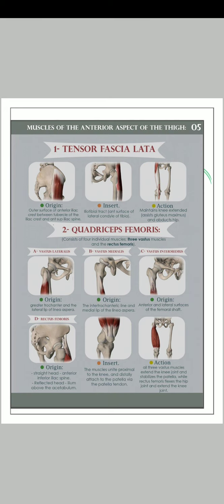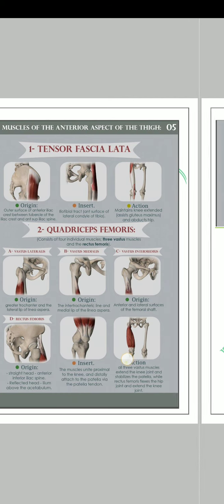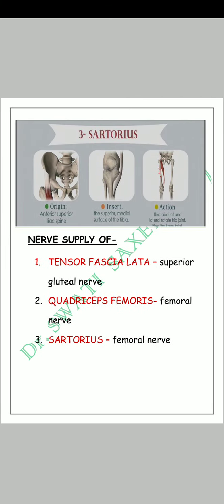So we have learned two muscles of the anterior aspect of the thigh: first is the Tensor Fasciae Latae, and the other is the Quadriceps Femoris. Within the Quadriceps Femoris there are four muscles: Vastus Lateralis, Vastus Medialis, Vastus Intermedius, and Rectus Femoris. Regarding nerve supply, all four quadriceps muscles are supplied by the femoral nerve.